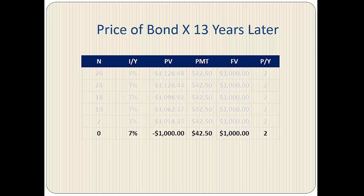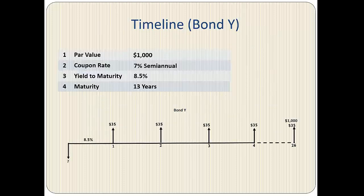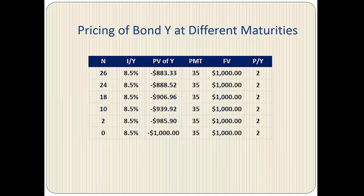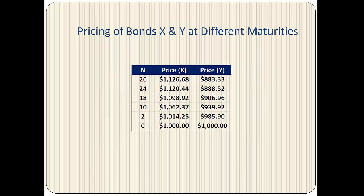At maturity, the present value is one thousand dollars, the par value. This will always be the case — at maturity, the price of the bond will equal its par value. For Bond Y, the par value is also one thousand dollars, the semi-annual coupon payment is $35, the yield to maturity is 8.5%, and the bond matures in 13 years or 26 semi-annual periods. We follow the same calculator steps to find the corresponding prices at different maturities.